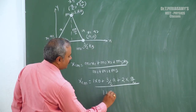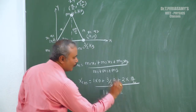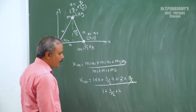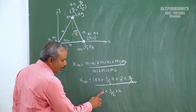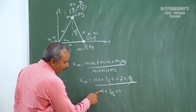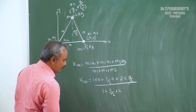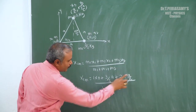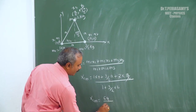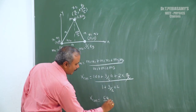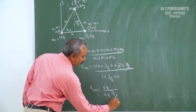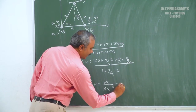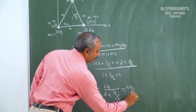The total mass is 1 + 3/2 + 2 = 9/2. In the numerator we get 2a + 3a = 5a, so 5a/2 divided by 9/2. The 2s cancel, giving x center of mass equal to 5a/9.